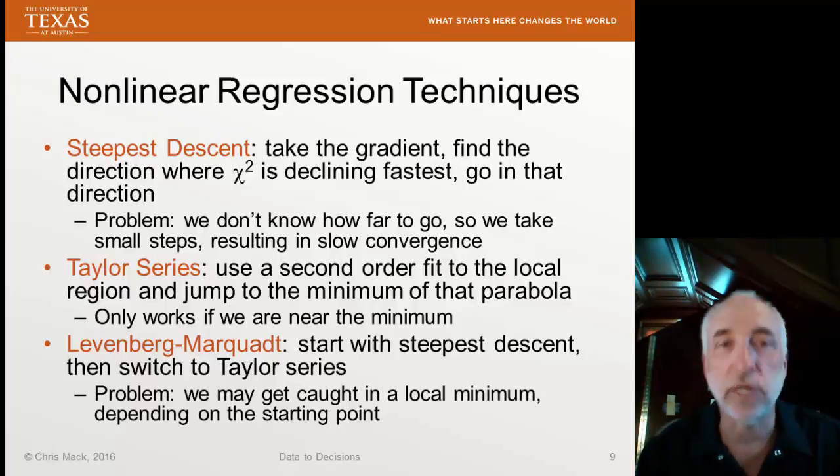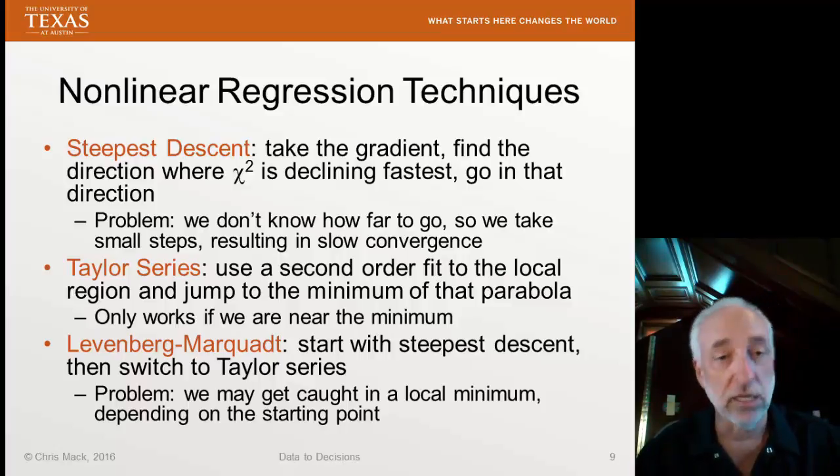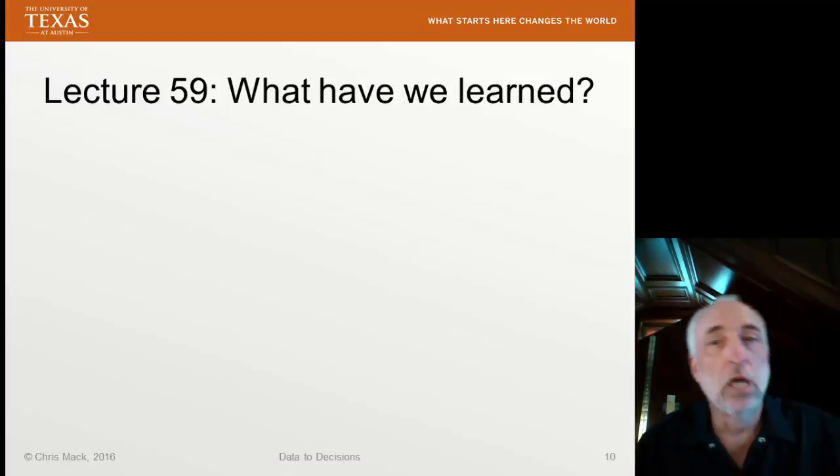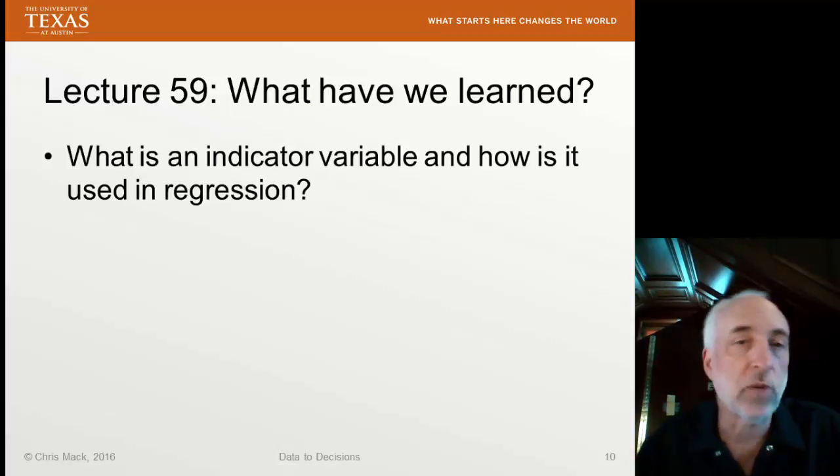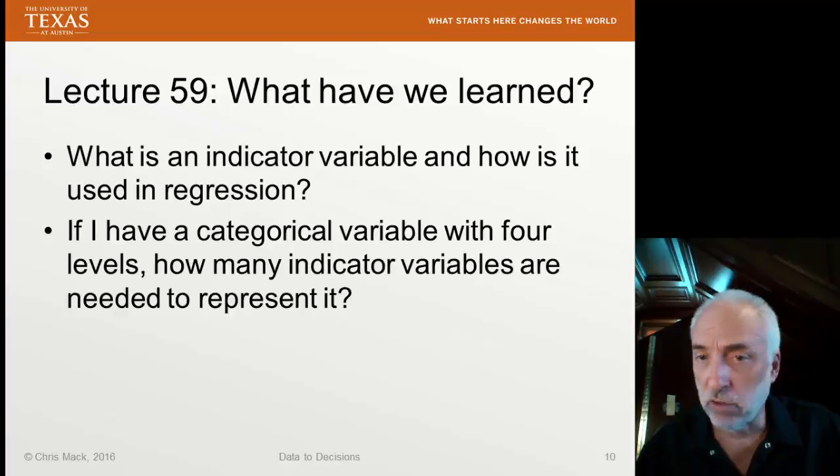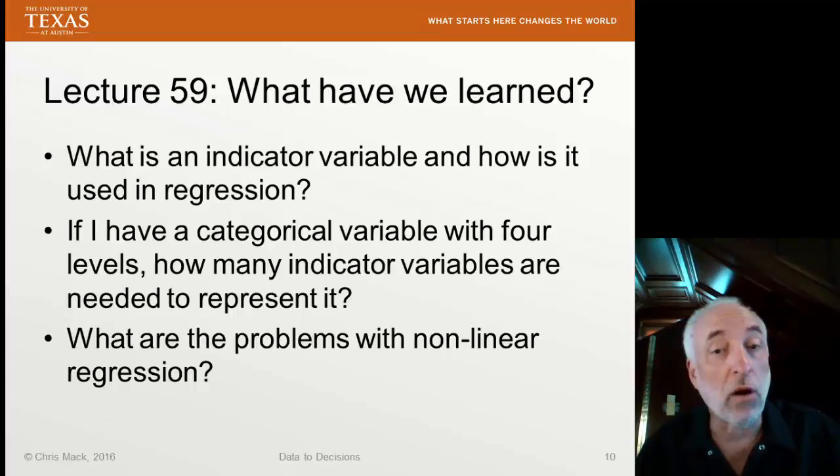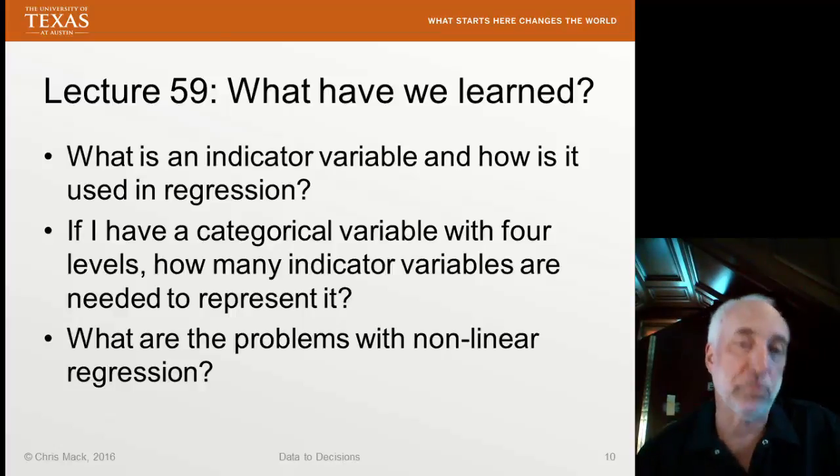There's many other techniques we can use for nonlinear regression. I'm not going to go into the details. Just be aware that they are out there. So, what have we learned in Lecture 59? Please answer these questions. What is an indicator variable, and how is it used in regression? If I have a categorical variable with four levels, how many indicator variables are required to represent it? And finally, what are the problems with nonlinear regression? Well, that's it for regression. We're going to start talking more generally about model building, regression being one of the tools we use. Until then.